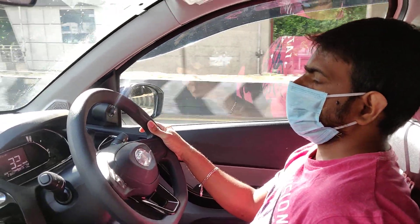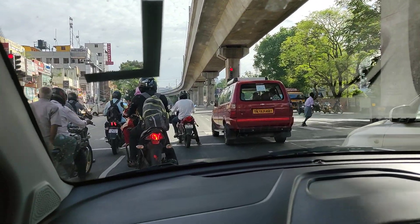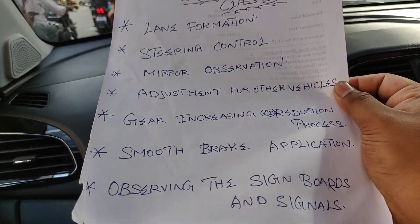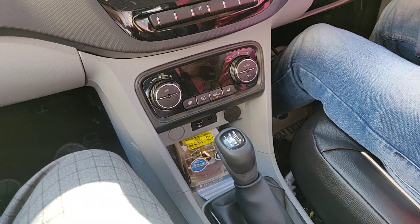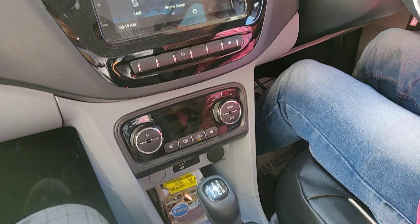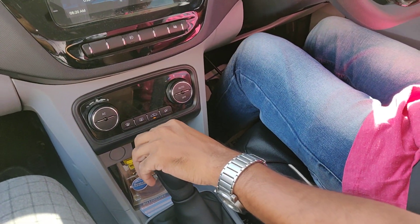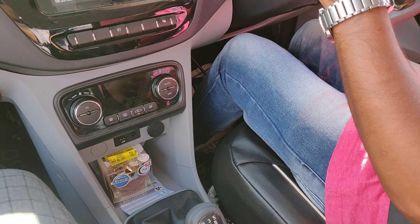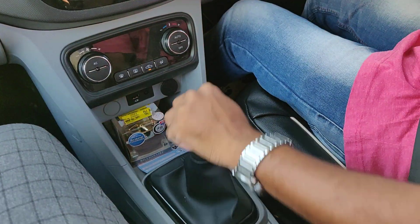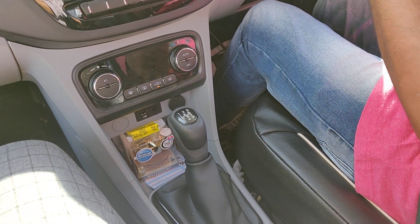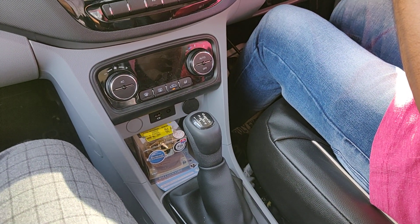Once the vehicle has fully stopped, use 1st gear. Slowly release the clutch. Gradually move — initial pick-up in 1st gear. Then shift to 2nd — perfect. Make a move. 2nd gear, 3rd gear, and then 4th gear. Very good — gear shifting process is smooth.